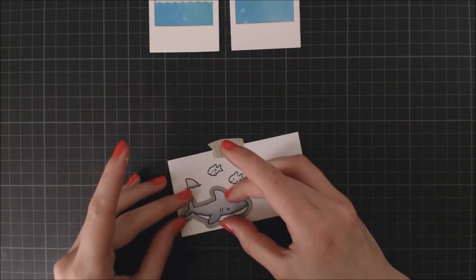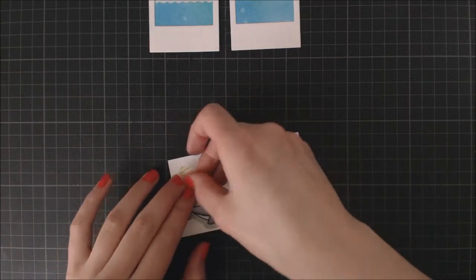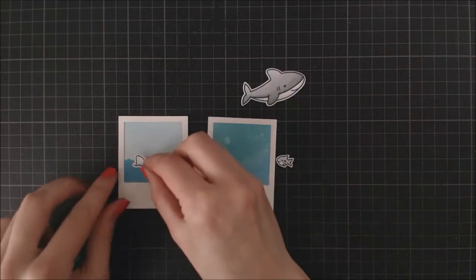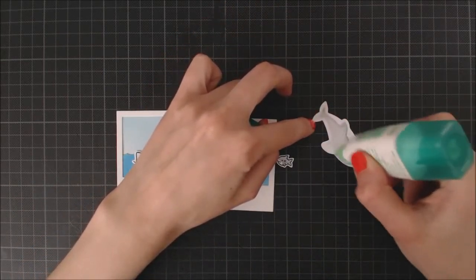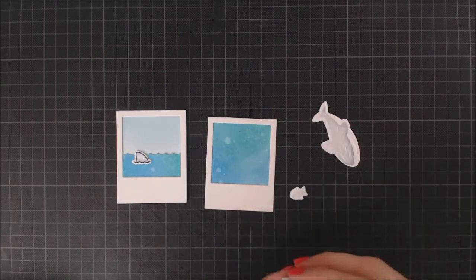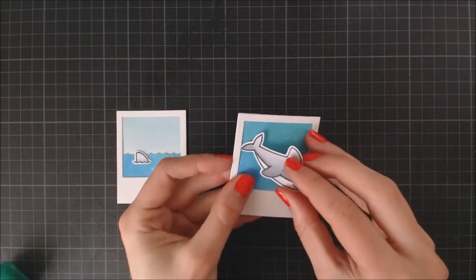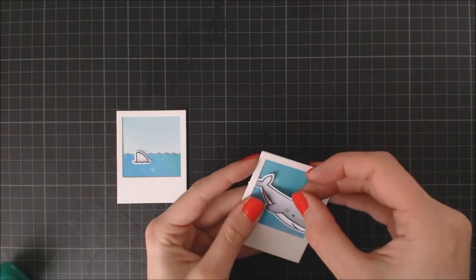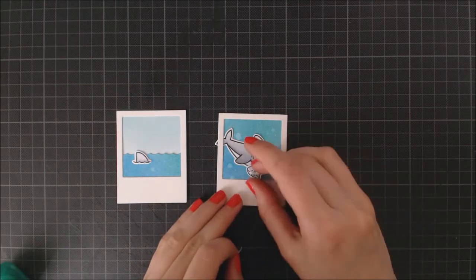Once I've finished coloring the sharks, I'm going to use the coordinating dies to cut the dad shark and fin. Because Little Chubby Shark is unique, I'm going to cut him out with my scissors, leaving a little white border around him. To finish off the Polaroid scenes, I'm going to glue the fin and dad shark down with liquid glue and I'm going to be using some foam adhesive for Little Chubby Shark. After placing the big shark behind the Polaroid frame, I'm going to cut the excess with my scissors.